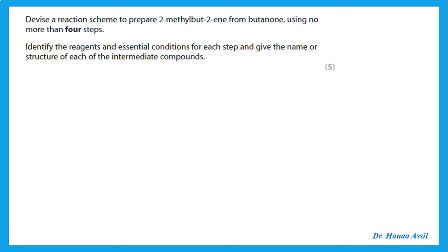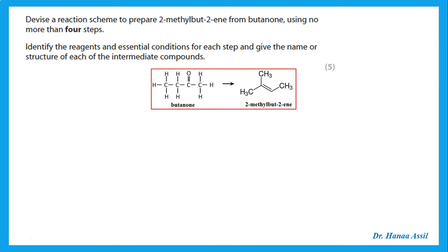Next: devise a reaction scheme to prepare 2-methylbutene from butanone using no more than four steps. Identify reagents and essential conditions. The required product has an extra carbon compared to butanone, so we need to add that extra carbon somehow. We also need to get a double bond, which can come from dehydration of an alcohol.